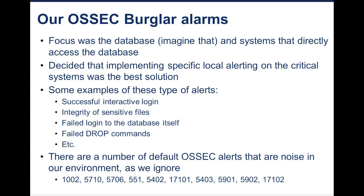The last point on this slide: there were a number of default OSSEC alerts where the signal-to-noise ratio was so low it drove you crazy. We chose to ignore those. I don't care about failed SSH logins because people are scanning us all the time and we have controls in place. So I don't need that alert. That list of ignored defaults may be something you would use with OSSEC, or it may not — your mileage may vary.